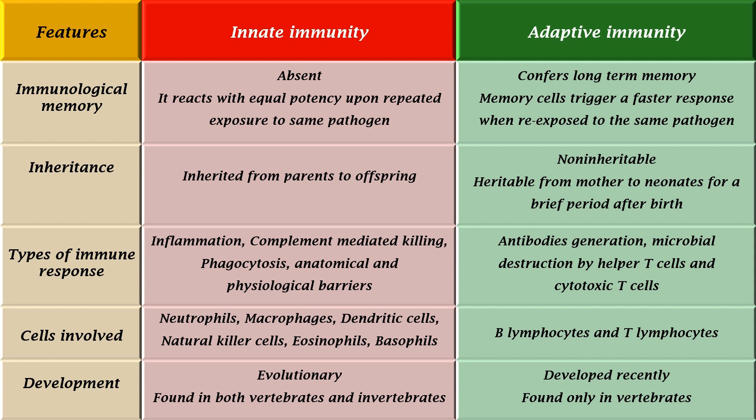Types of immune response in adaptive immunity include antibody generation, microbial destruction by helper T-cells, and cytotoxic T-cells. Neutrophils, macrophages, dendritic cells, natural killer cells, eosinophils, and basophils are the cells of innate immunity. Cells of adaptive immunity are B-lymphocytes and T-lymphocytes. Innate immunity is found in both vertebrates and invertebrates, whereas adaptive immunity is found only in vertebrates.